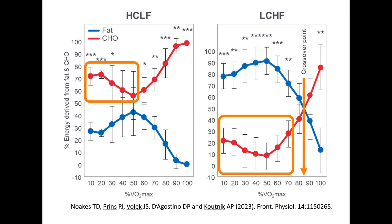However, the type of diet regularly adopted strongly influences the crossover point. For example, this figure shows two situations. On the left, it is the contribution of fat and carbohydrate to energy production as exercise intensity increases for subjects on a high-carb, low-fat diet.